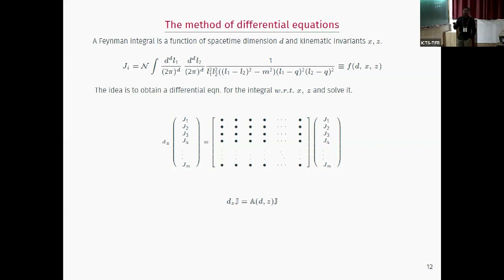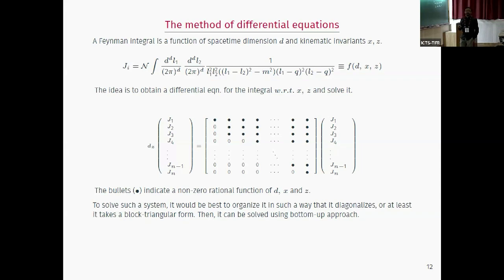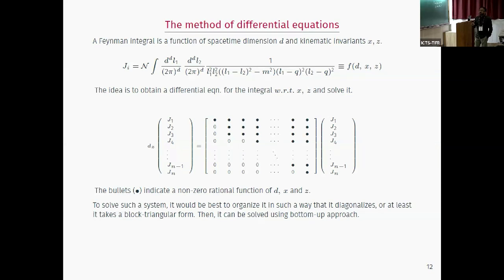Luckily for us the system comes in a block-triangular form. The last integral satisfies a homogeneous differential equation depending only on itself — it can be solved immediately. The second-to-last depends on itself and already-solved ones — that's an inhomogeneous equation solvable once the homogeneous part is known. You go up one by one solving each in turn. For coupled blocks, you take the first row, solve for J2, substitute back into the second row to get a second-order ODE for J1, and solve order by order.